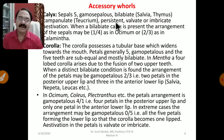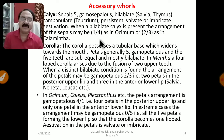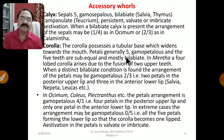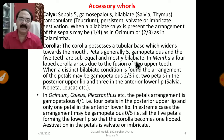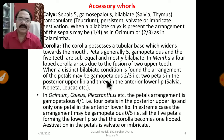The calyx is persistent, valvate or imbricate in aestivation. When a bilabiate calyx is present, the sepal arrangement may be one-by-four as in Ocimum, or two-by-three as in Calamintha. The corolla possesses a tubular base which widens toward the mouth. The petals are generally five, gamopetalous — all the petals are fused. The five teeth are subequal and mostly bilabiate. Bilabiate corolla is the most important family character. In Mentha, a four-lobed corolla arises due to fusion of two upper teeth.